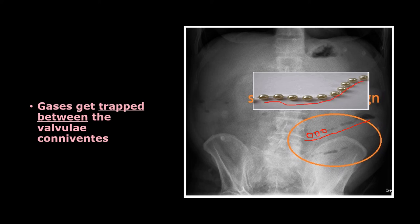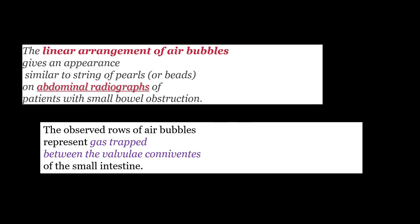This gives an appearance much similar to that of a string of pearls — that's how it gets the name 'string of pearls appearance' in small bowel obstruction. To summarize, the reason for this appearance seen in abdominal radiographs is the linear arrangement of air bubbles, which are gases trapped between the mucosal folds, or valvulae conniventes, of the small intestine.